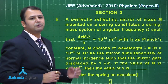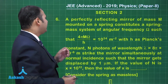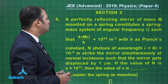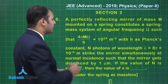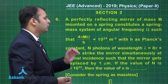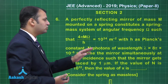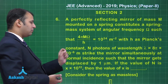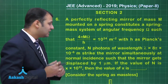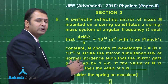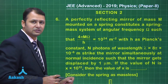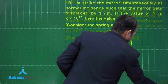The next question belongs to chapter atoms and nuclei. A perfectly reflecting mirror of mass M mounted on a spring constitutes a spring-mass system of angular frequency omega, such that 4 pi M omega over h equals 10 to the power 24 per meter squared, where h is Planck's constant. Photons of wavelength lambda equals 8 pi into 10 to the power minus 6 meters strike the mirror simultaneously at normal incidence such that the mirror gets displaced by 1 micrometer. If the value of n is x into 10 to the power 12, we have to find the value of x.